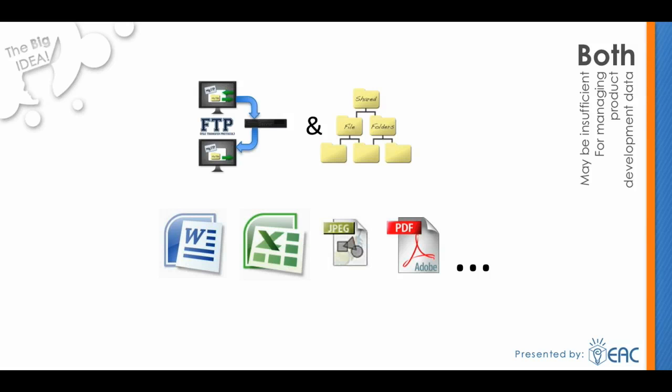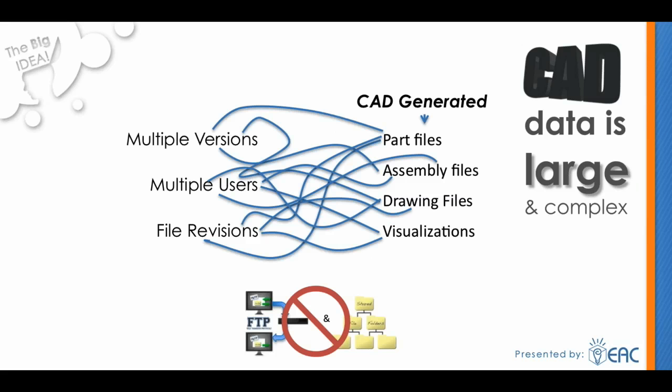What we're exploring today is how FTP sites and shared folders may be insufficient for managing product development data. Anyone who works with CAD data knows it is large and complex. Looking at this illustration, you get an idea of how the volume of information starts to explode — especially with 3D CAD systems that use part, assembly, drawing files, and visualizations. Factor in that there will be multiple versions and revisions to those drawings, and multiple users, and suddenly you've got a lot of data to keep track of.